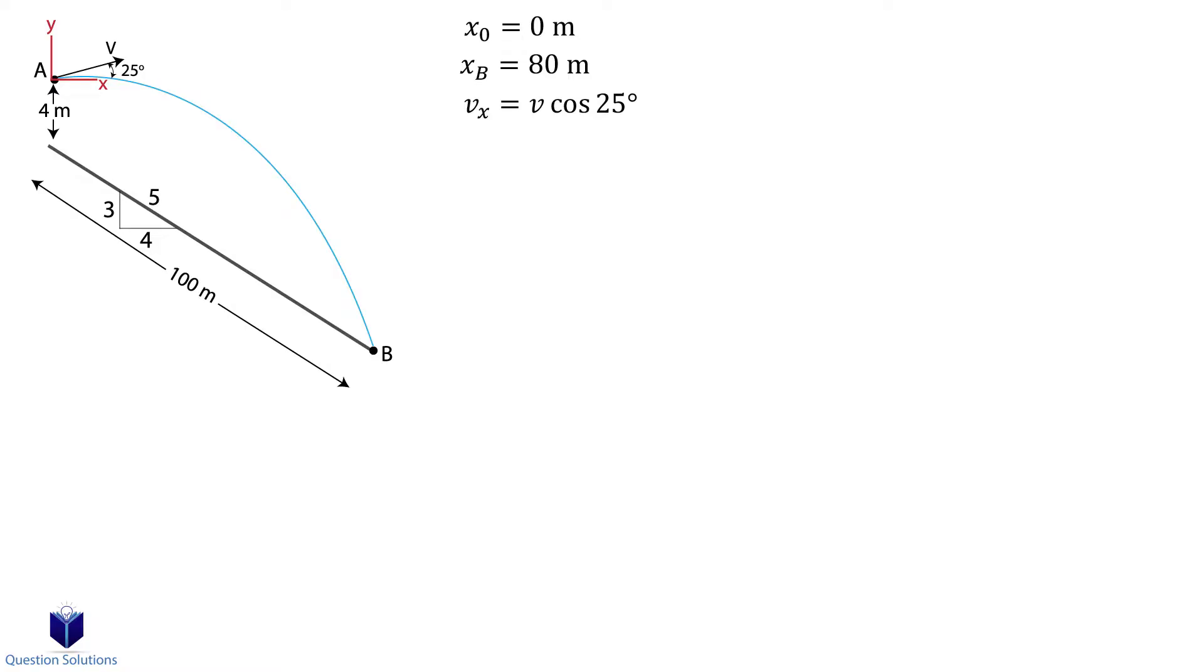Now for the vertical direction, the starting location is at 0 meters. Point B is at negative 64 meters. That's 3 over 5 multiplied by 100 meters plus the extra 4 meter height of the ramp. Remember that our coordinate system starts at point A, and point B is below point A, so it's a negative displacement.